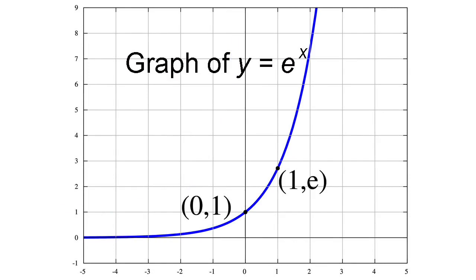But there's one special case where the slope is exactly equal to the height, and this is the curve E to the x. Not only is the steepness of the curve E to the x equal to its height at every point, but so is the rate of increase of the steepness, and the rate of increase of the rate of increase of the steepness, and so on.